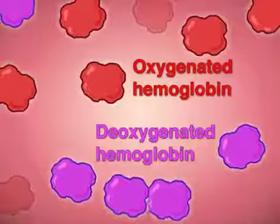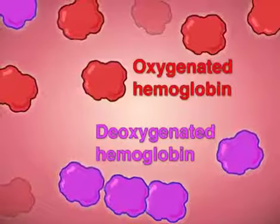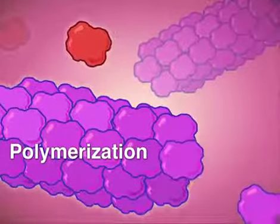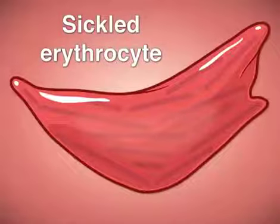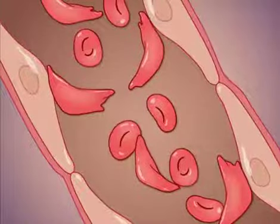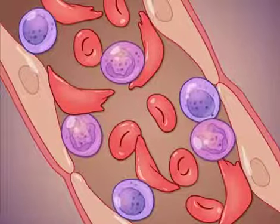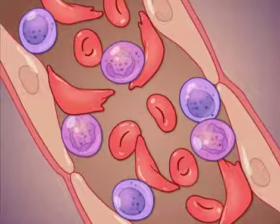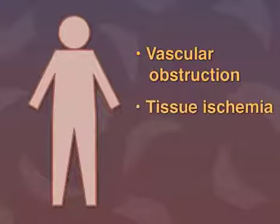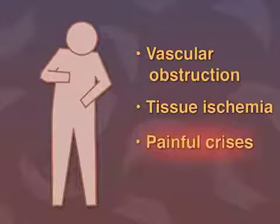In patients with sickle cell disease, abnormal hemoglobin polymerizes when deoxygenated, forming the characteristic sickle-shaped erythrocytes. Abnormal polymerization, along with adhesion of leukocytes and sickled erythrocytes to the endothelium, causes vascular obstruction and tissue ischemia, leading to painful crises.